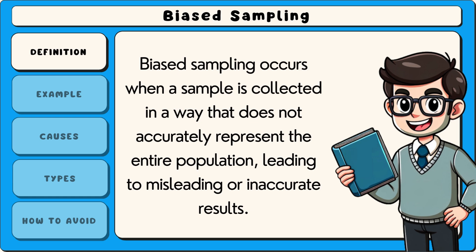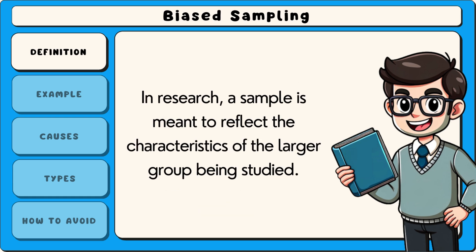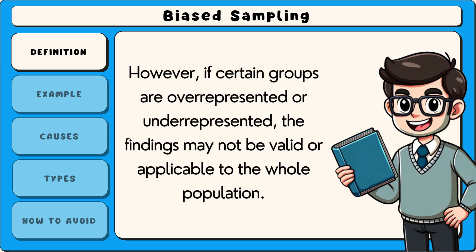Biased sampling occurs when a sample is collected in a way that does not accurately represent the entire population, leading to misleading or inaccurate results. In research, a sample is meant to reflect the characteristics of the larger group being studied. However, if certain groups are overrepresented or underrepresented, the findings may not be valid or applicable to the whole population.